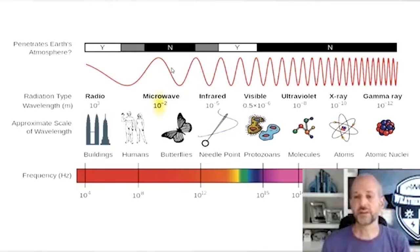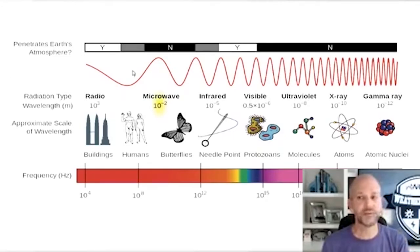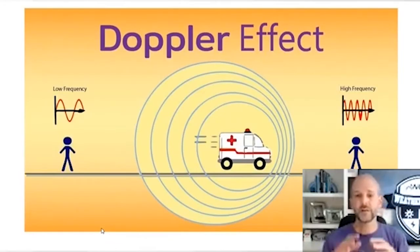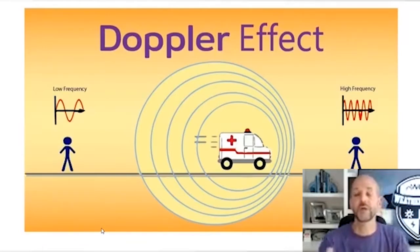One of the interesting things about radar is that the type we use is called Doppler radar. You probably just take the 'Doppler' part for granted, but it refers to the Doppler effect. The Doppler effect means that the frequency of sound waves, energy waves, or even light waves changes based on whether they're coming at you or moving away from you.